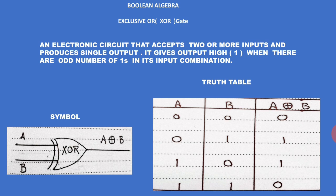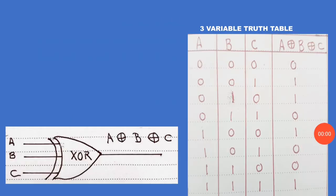The last row has combination one-one — two ones — so the output is zero. Now for the three-variable XOR gate with inputs A, B, C — observe the symbol and the operator circle-plus. In the truth table: odd number of ones gives output one. First row zero, second row single one gives one, third row one again gives one, then zero-one-one gives zero.